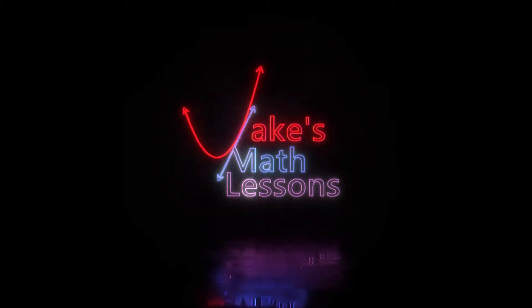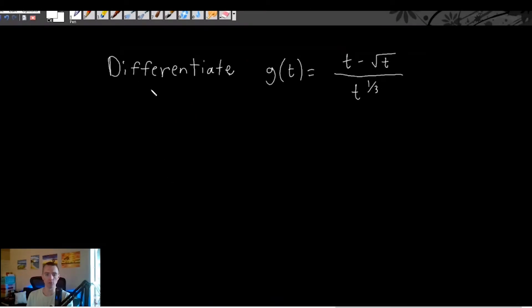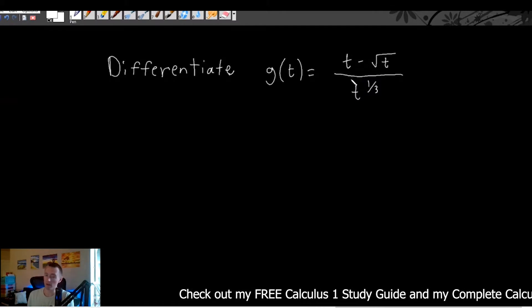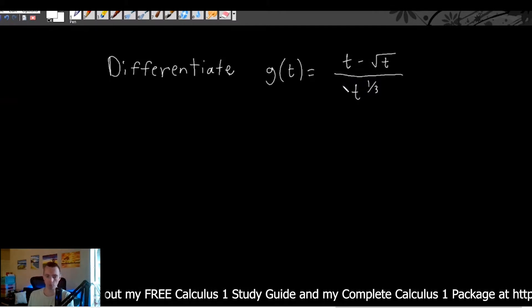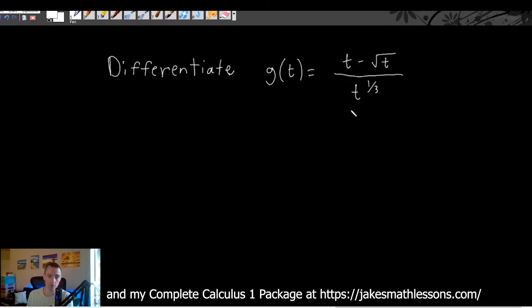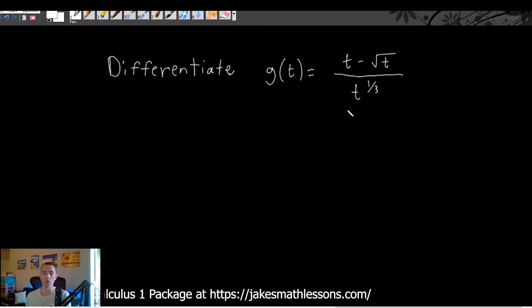You definitely shouldn't use a trick like this to avoid learning a topic, but it can help you complete the problem in a test situation. It's also a good general idea to keep in the back of your head as you work through other types of problems. Without further ado, let's jump into the example. We are going to differentiate g(t) = (t - √t) / t^(1/3). You're probably thinking product rule does not apply here — and you're right that quotient rule probably makes more sense.